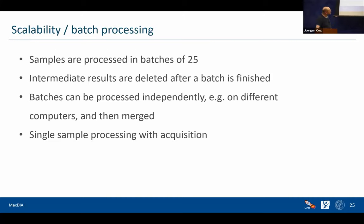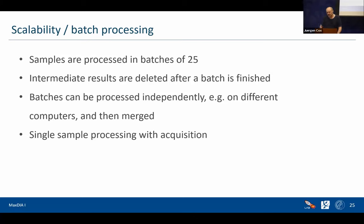Since the previous release, we have been working on scalability a lot, and for that we have batch processing implemented. The first step — peak detection, isotoping, library matching — is done in batches, and intermediate results are deleted so you don't fill up your disk. Batches can be any size you like; my standard is 25, but a special case could be one — you could analyze files while they're coming out of the machine and then put them together later.